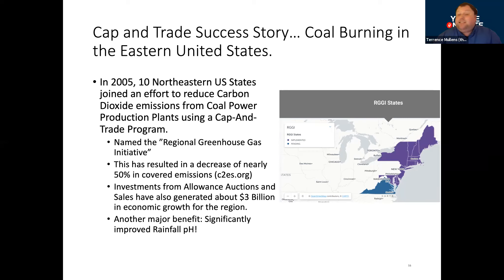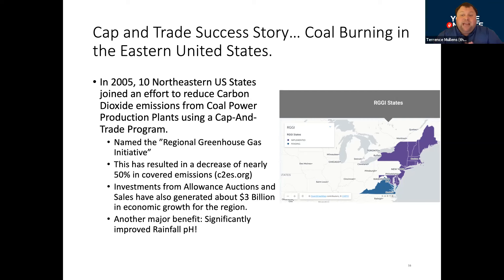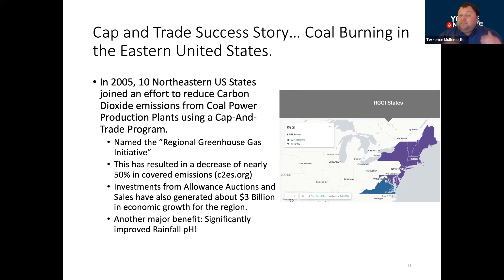In the mid-2000s, they decided to do something about it — particularly 10 Northeastern United States states shown on this map in purple — and said: we are going to implement a cap and trade program on the use of coal. It was named the Regional Greenhouse Gas Initiative. Basically, it was a cap on how much coal you're allowed to use and how much you're allowed to emit.